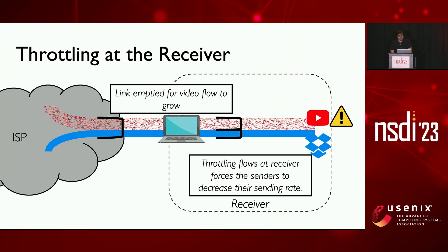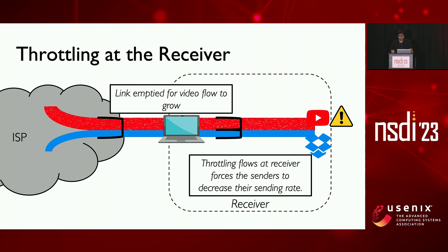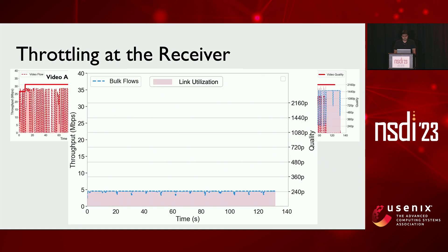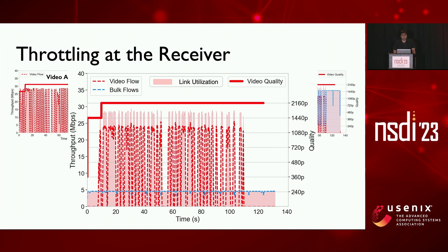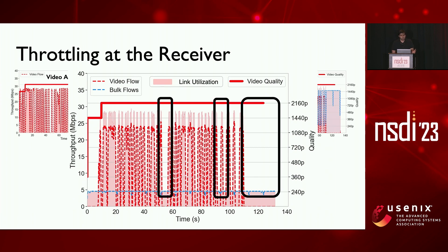This empties the link for other flows to grow over time. For instance, the ABR algorithm would use up the capacity emptied out by throttling the bulk flow in a few RTTs. So in our example, we throttled the bulk flow to 5 Mbps, which left 25 Mbps for the video flow to consume whenever it needed it. This definitely resulted in high video quality, but there is also a lot of link underutilization.